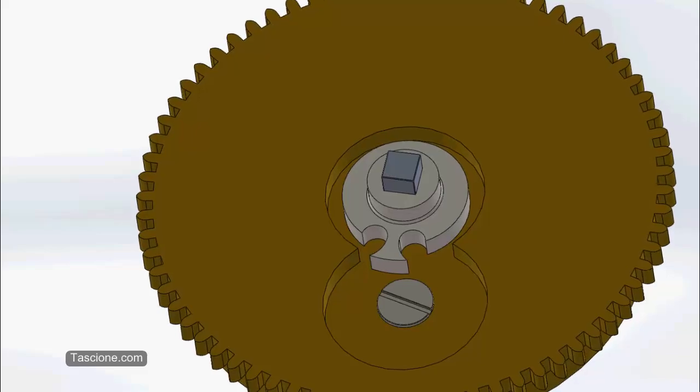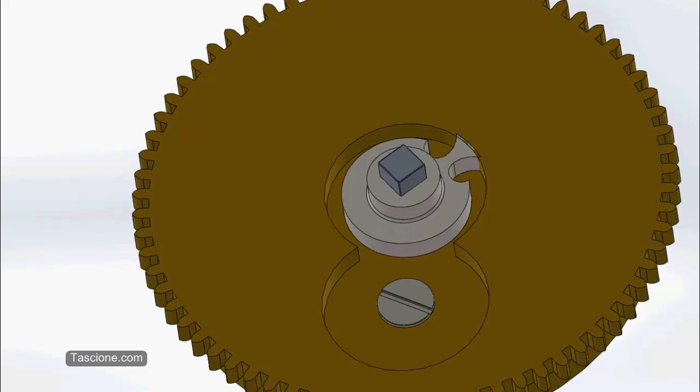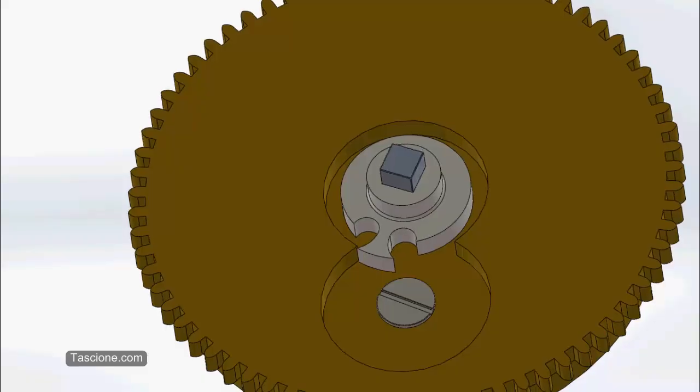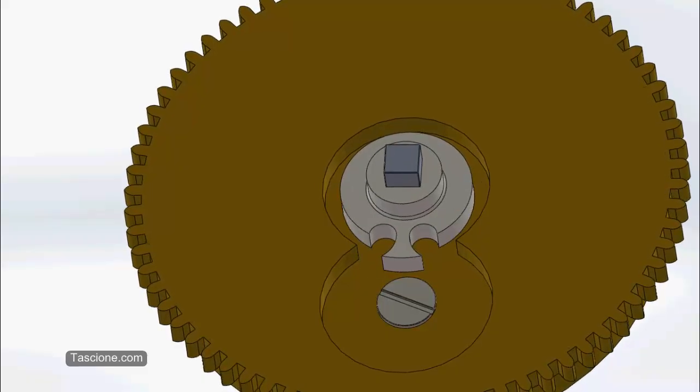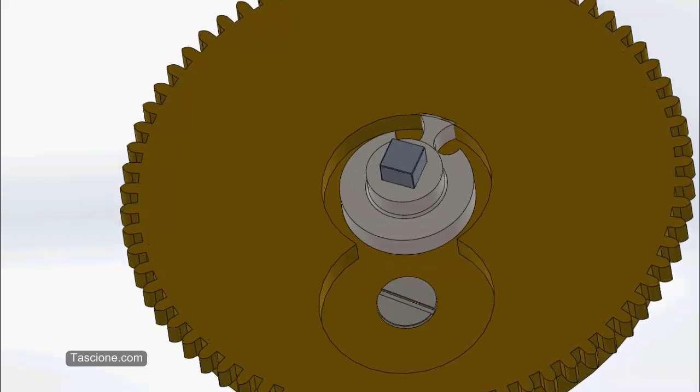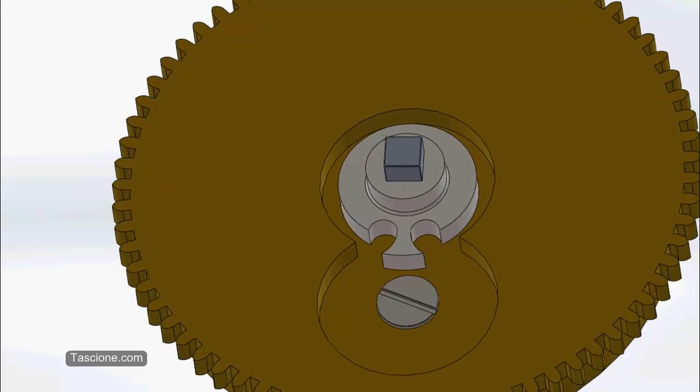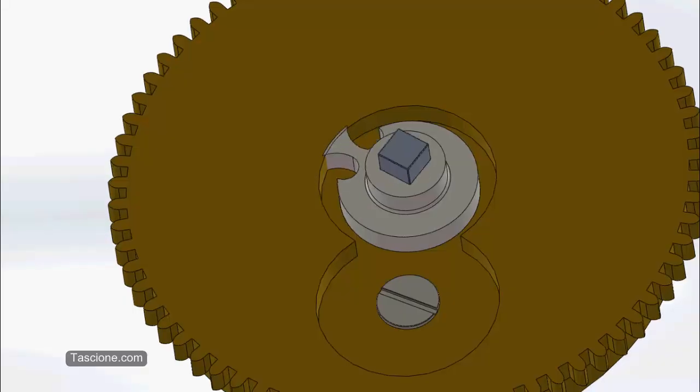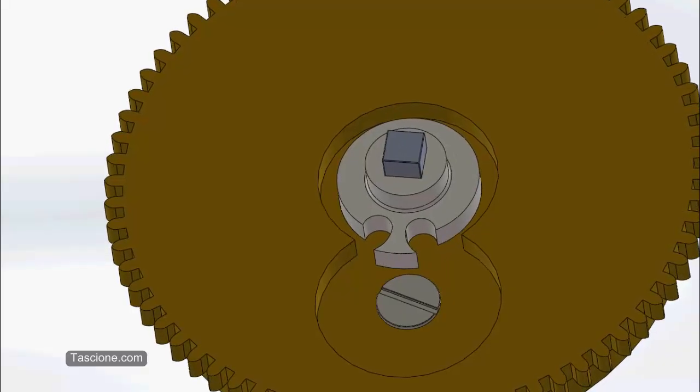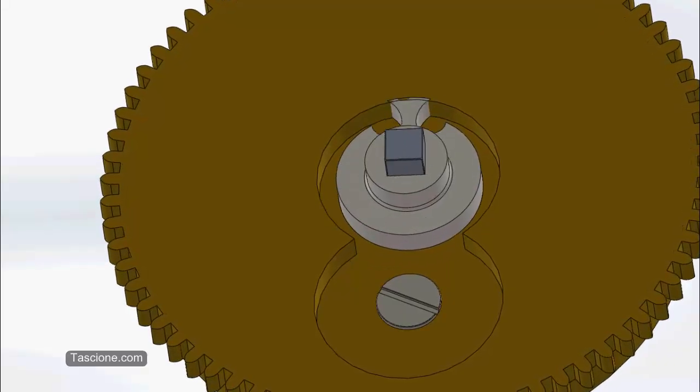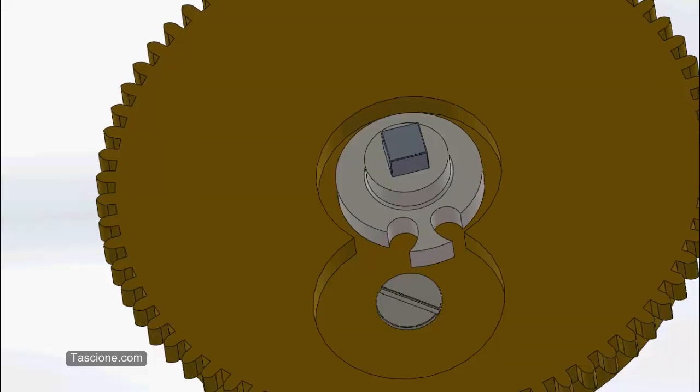Now that the mainspring is completely let down, we can check to see that the mainspring length allows for six full turns of the arbor by counting the winds until fully wound. And that's six.